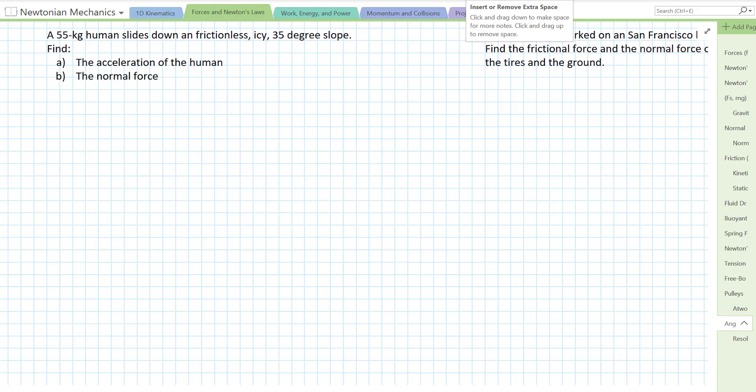A 55 kilogram human slides down a frictionless, not and frictionless, a frictionless icy 35 degree slope. Find the acceleration of the human and the normal force. So I'm going to start by sketching out my free body diagram.